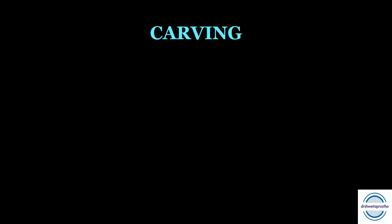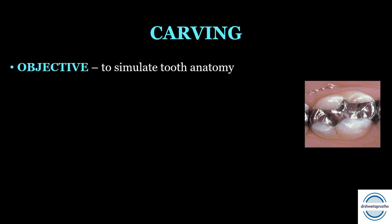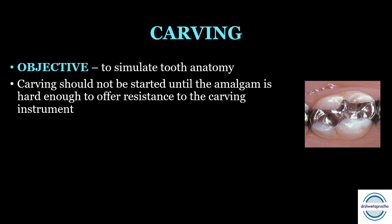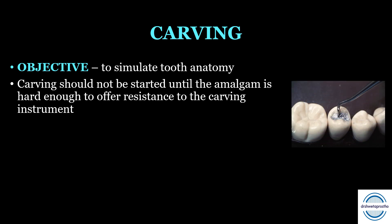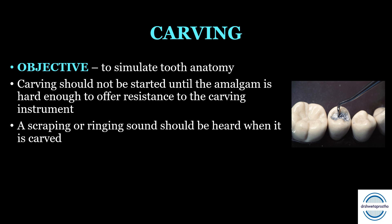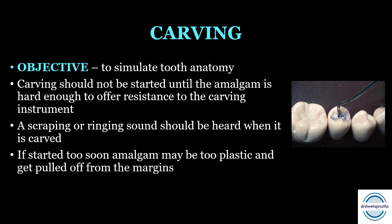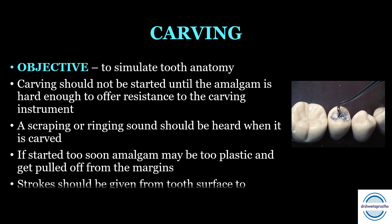Next is carving, whose main objective is to simulate tooth anatomy. Carving should begin only when the amalgam is hard enough to offer resistance to the carving instrument — indicated by a scraping or ringing sound when carved. This is a common viva and MCQ point. If carving is started too soon, the amalgam may be too plastic and get pulled off from the margins. Carving strokes should be given from the tooth surface to the amalgam.